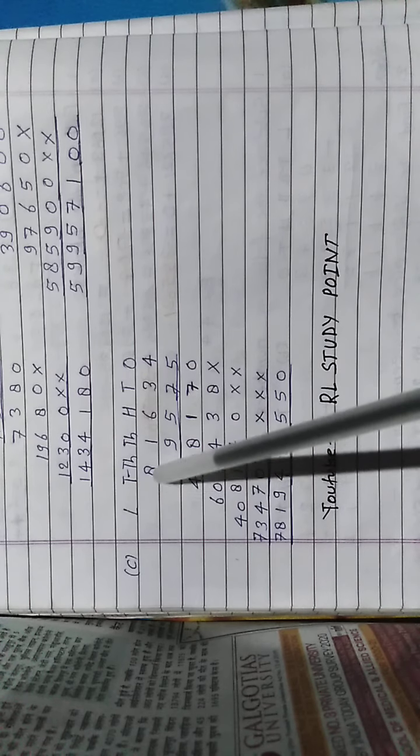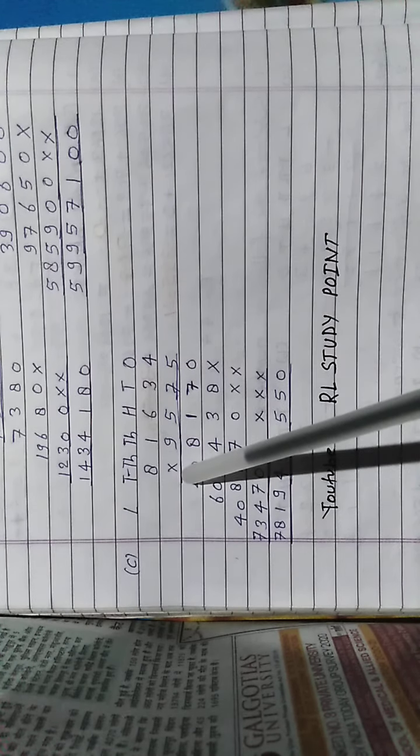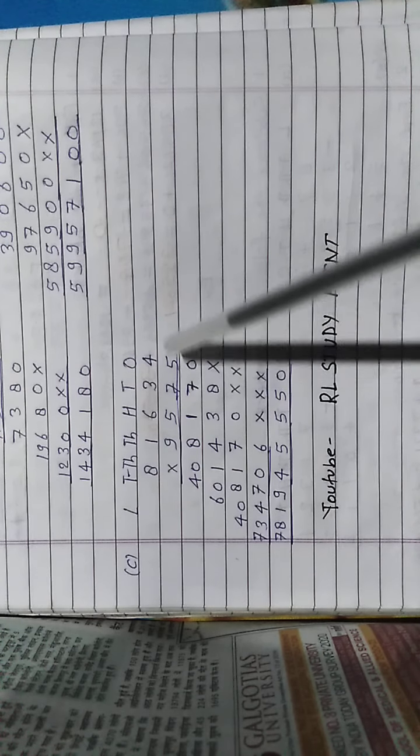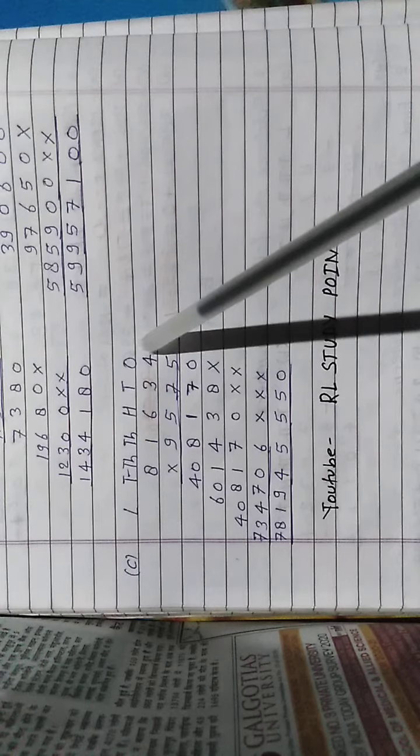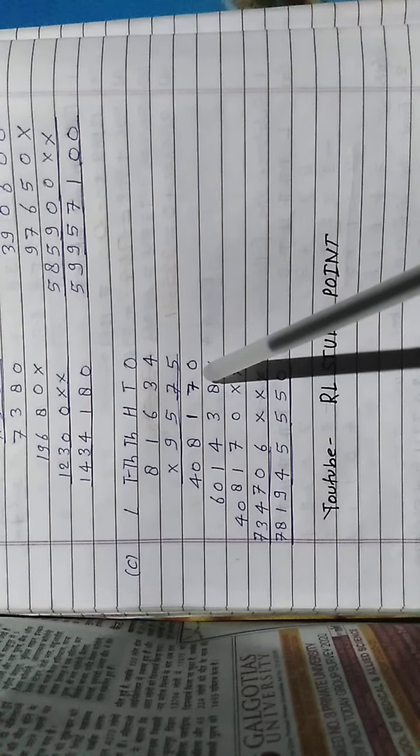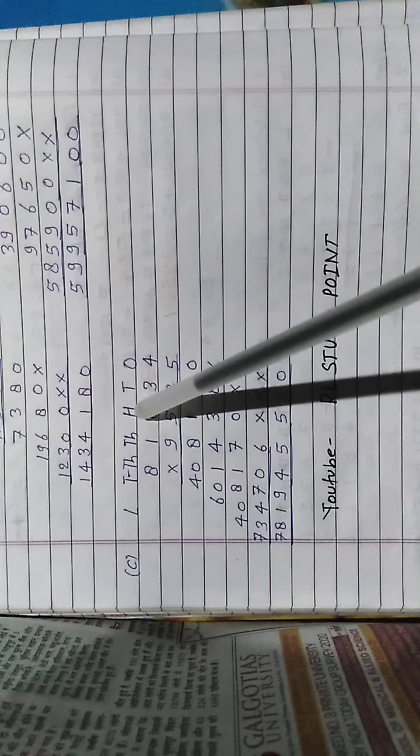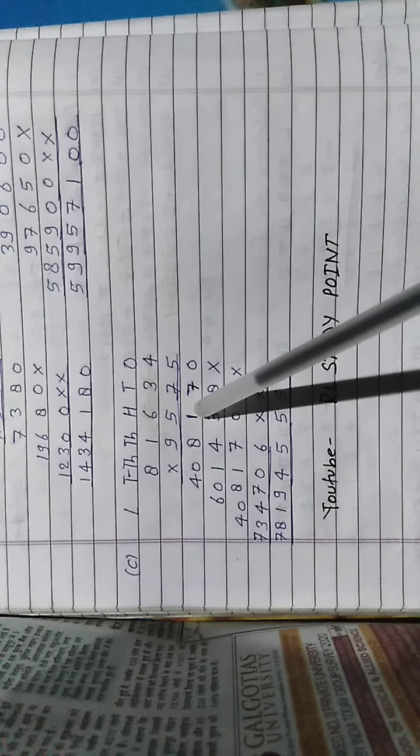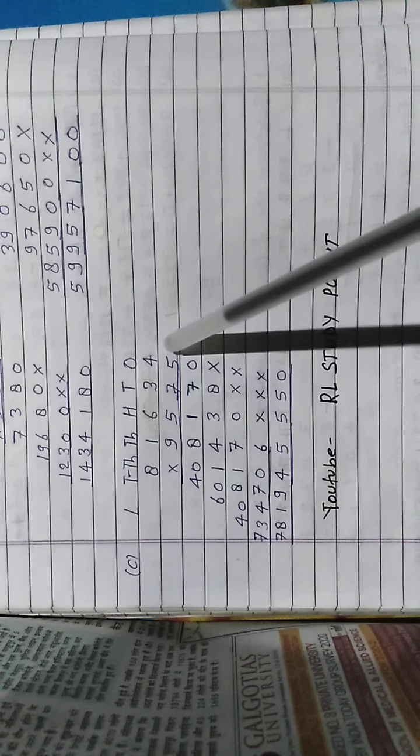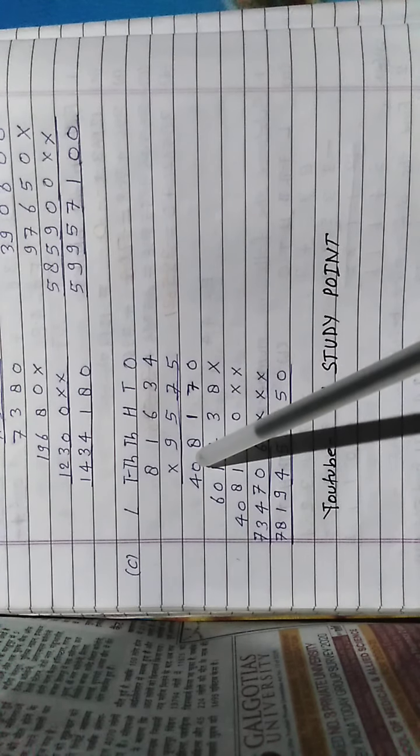Question c, that's 81634 multiply by 9575. It means this 5 times 4 is 20, 0 carry 2. 5 times 3 is 15 plus 2 is 17, 7 carry 1. 5 times 6 is 30 plus, 9 times 3 is 15 plus 1 is 31, 1 carry 3. 5 times 4 is 15 plus 3 is 8 and 5 times 8 is 40.